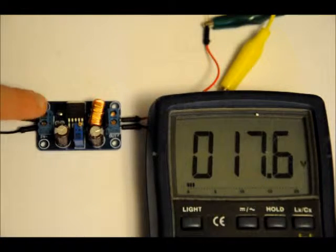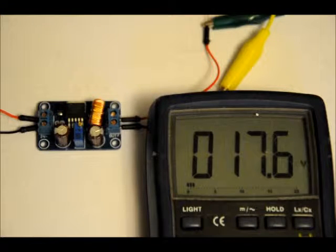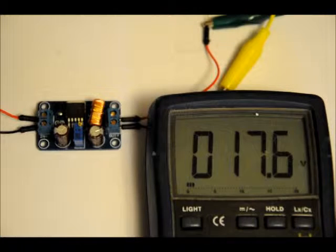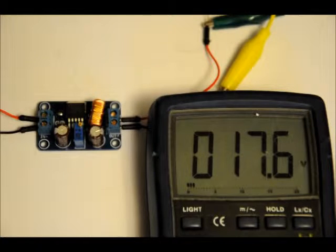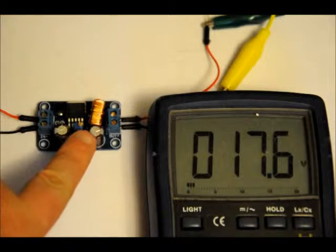There's an input terminal block, output terminal block. It can support 4 to 36 volts DC at the input, and you can vary the output using this onboard variable resistor.